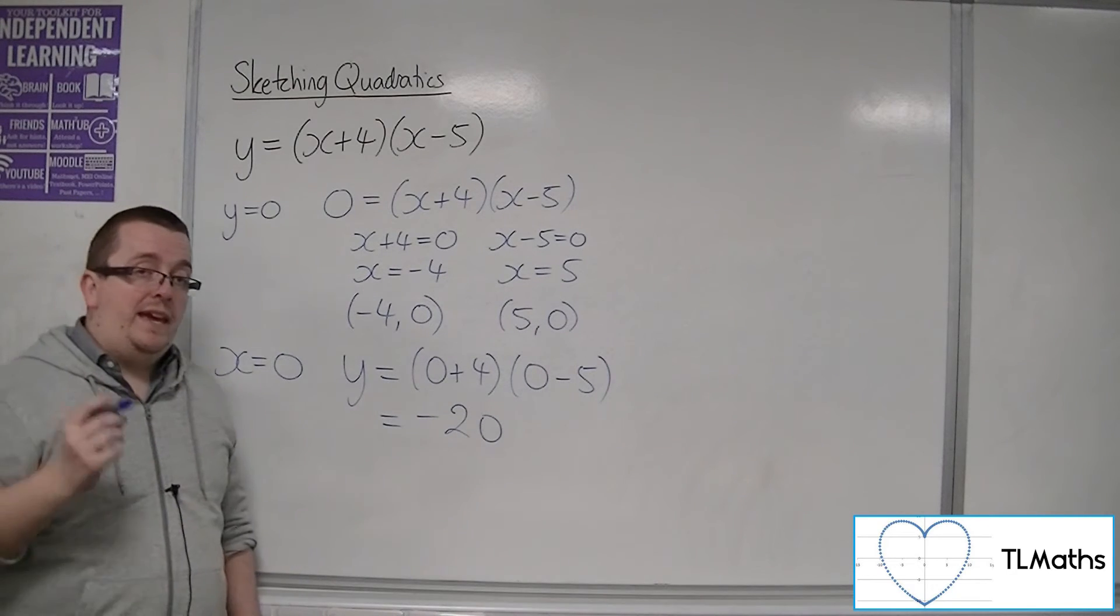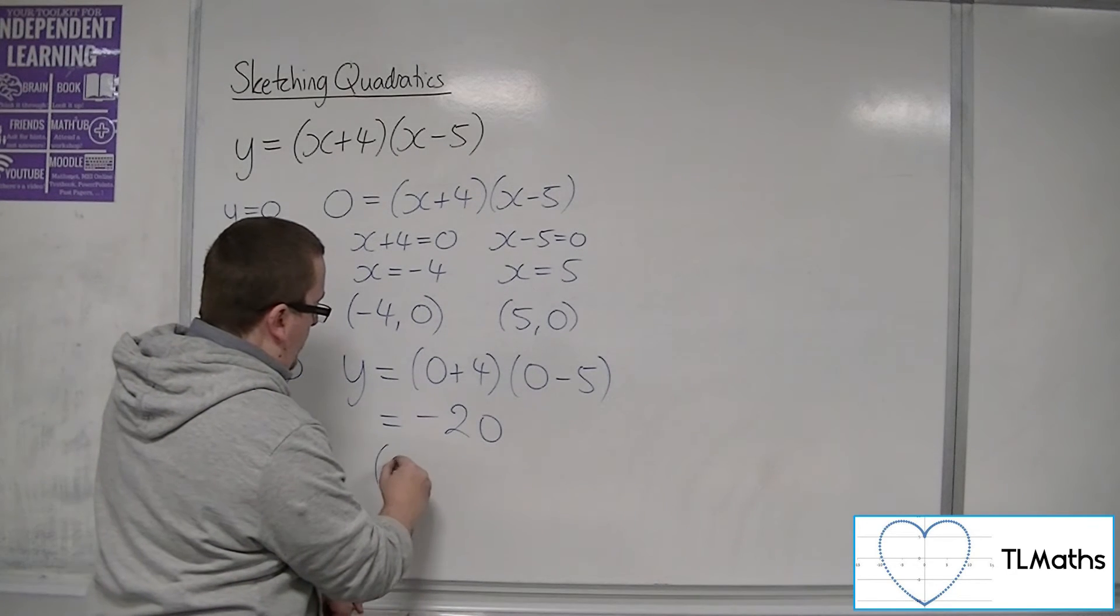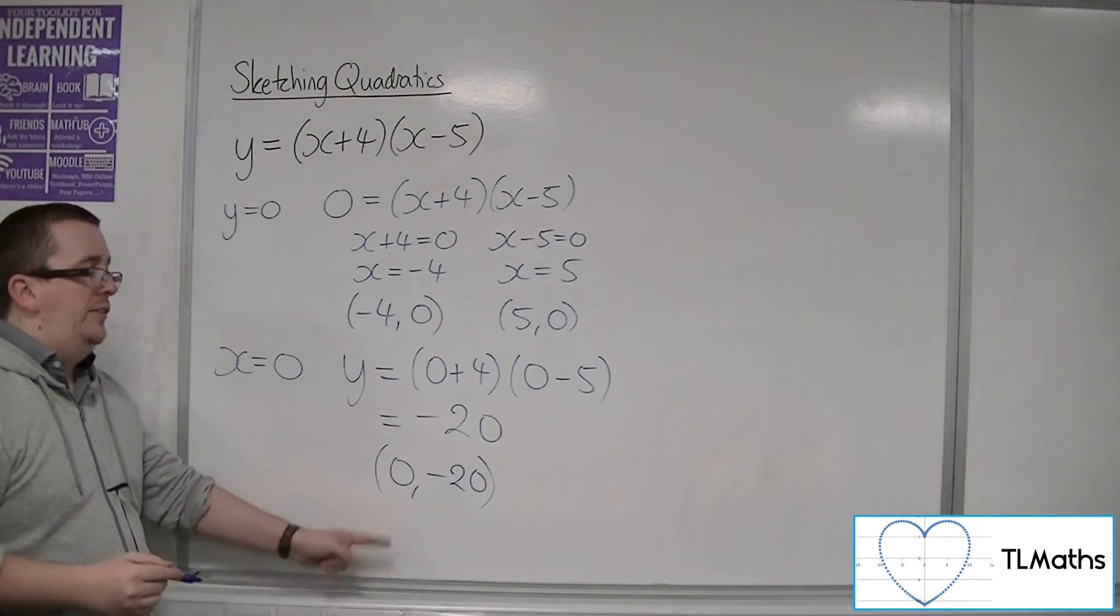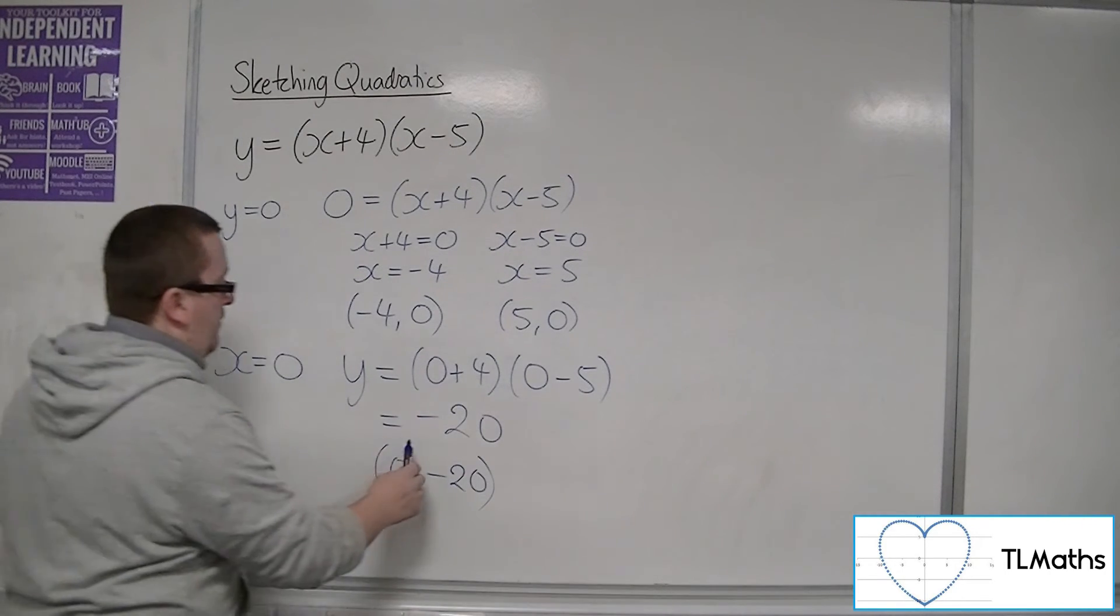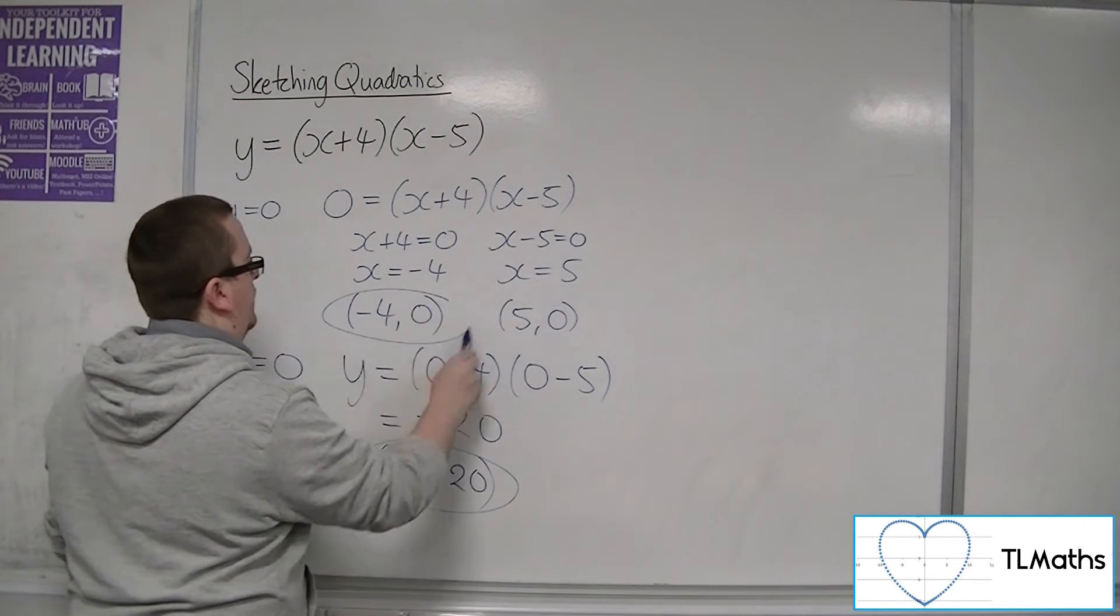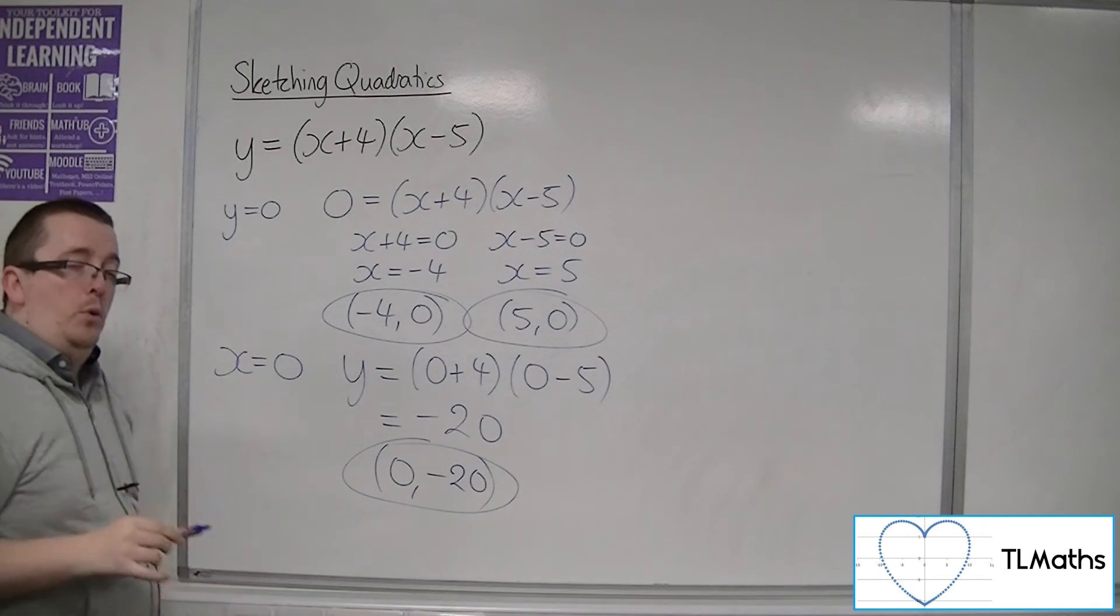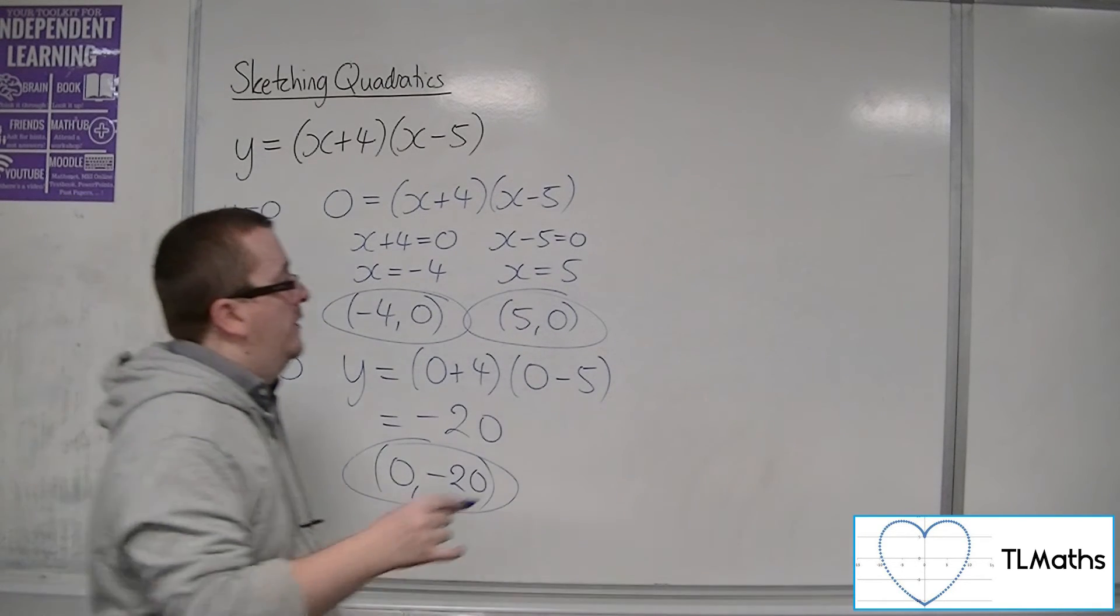So, this tells us the key information, because now we've got a crossing point on the y-axis at (0, -20). We have three points. Three important points that we can include on our sketch.